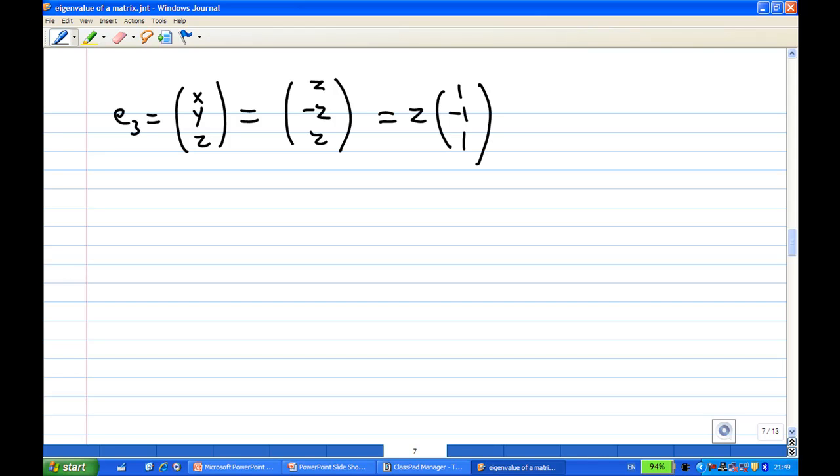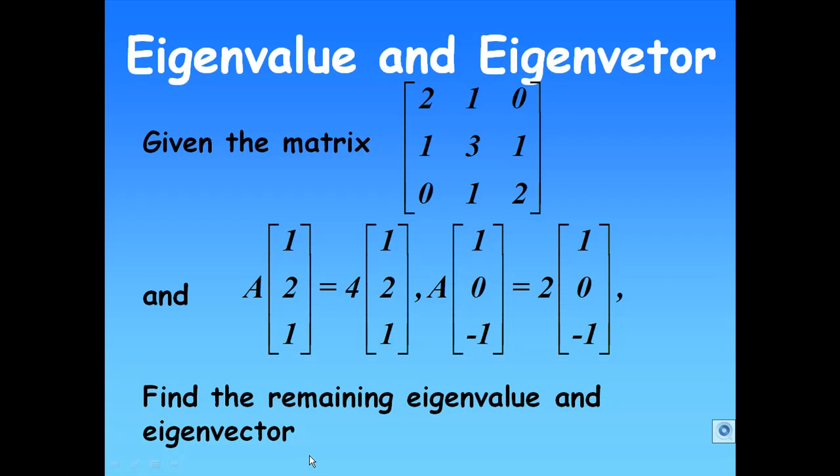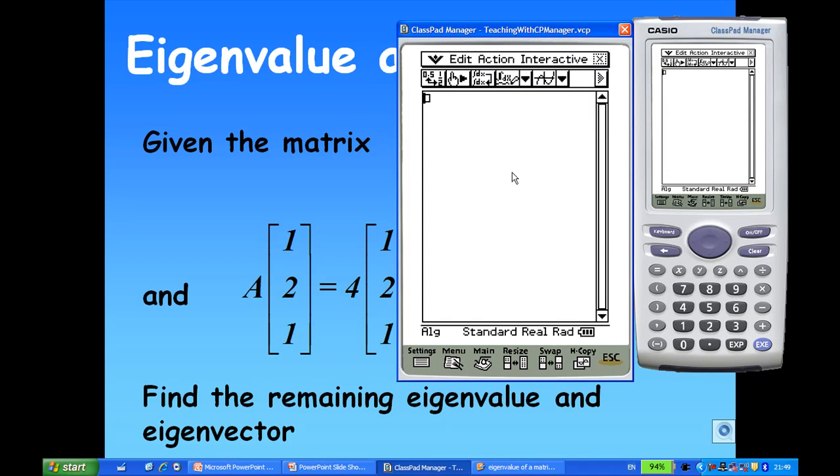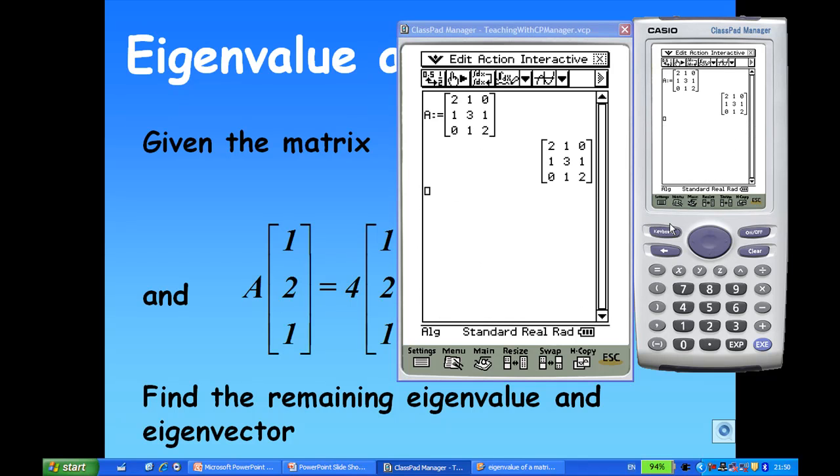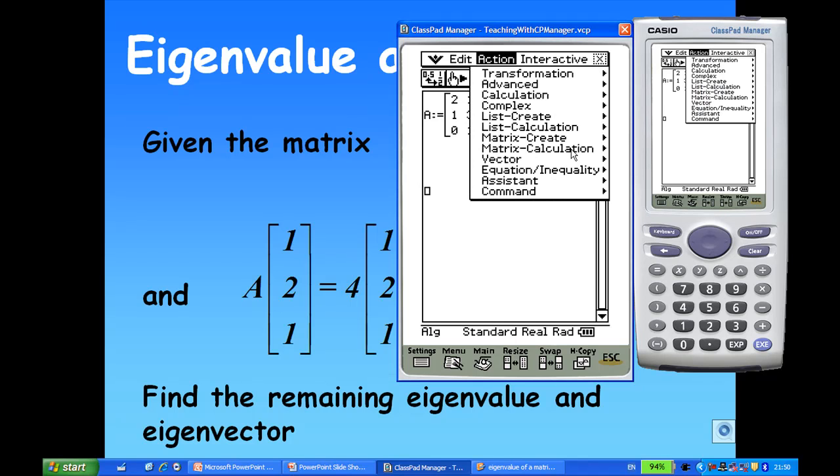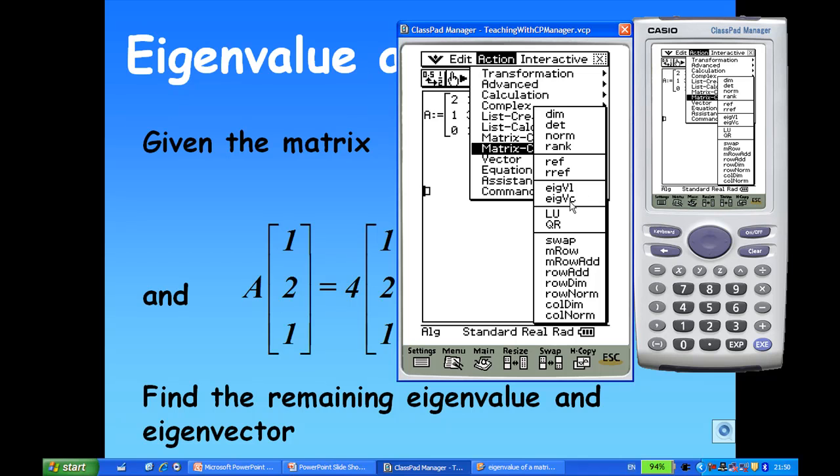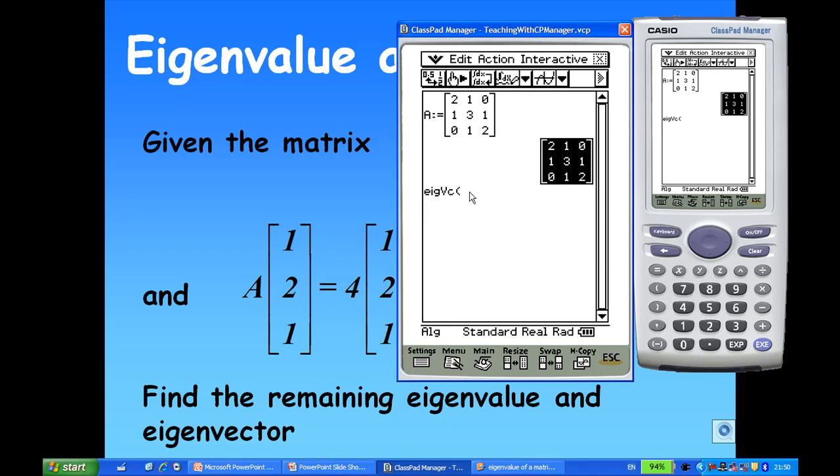Now, I am going to show you how to find this by ClassPad as well. So, let's go back to the PowerPoint, and I am going to get a keyboard. A is equal to, get a keyboard, 2D, calculus, 3 by 3 matrix now. And the matrix is [2,1,0; 1,3,1; 0,1,2]. Let me close the keyboard. I am going to find action, matrix calculation. I want to find the eigenvector of A.